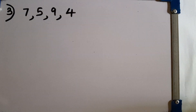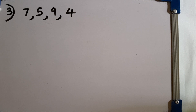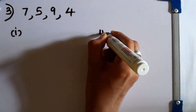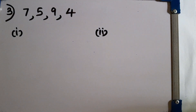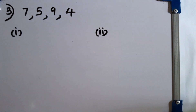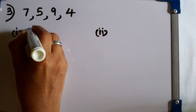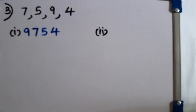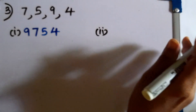Question number 3: using each digit 7, 5, 9, and 4 only once, write down the largest possible 4-digit number. We have to write the largest digit first. The largest digit here is 9, then 7, 5, 4. So 9,754 is the largest possible number.